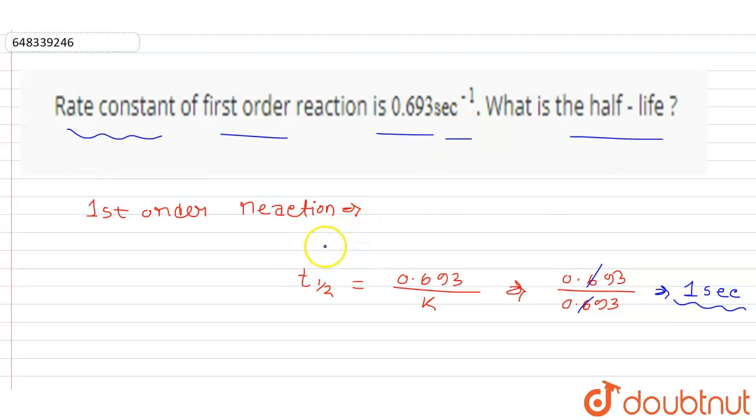We know the unit of rate constant for a first order reaction is time inverse, and here it is second inverse. So the half-life period unit is in seconds. The correct answer is one second. Thank you.